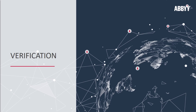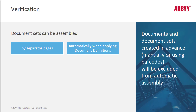Verification using document sets. Document sets can be assembled by separator pages or automatically when applying document definitions. Document definitions have the ability to identify and separate documents. Any document sets created in advance manually in the scan station or using barcoded separator sheets will be excluded from automatic assembly.